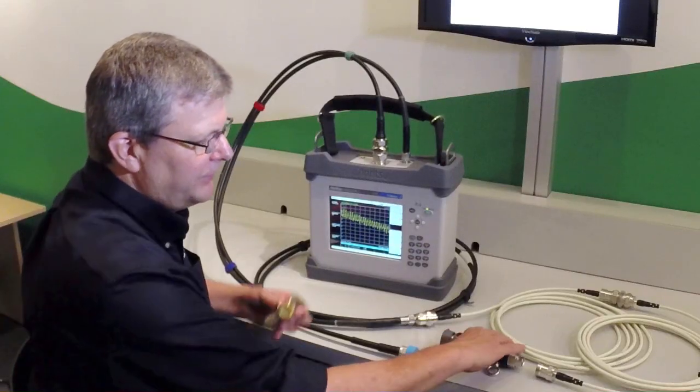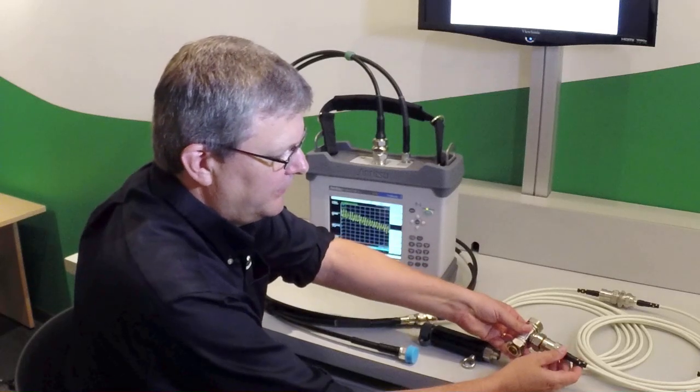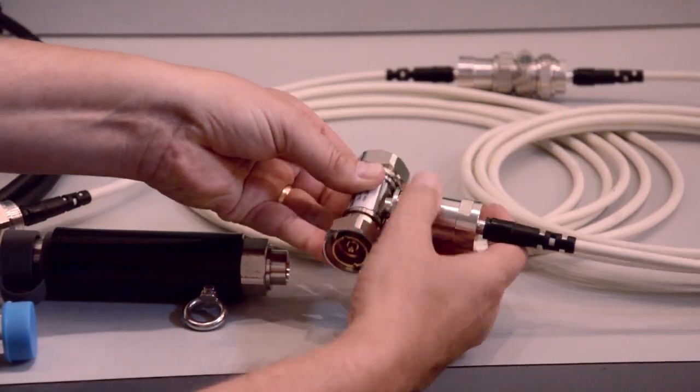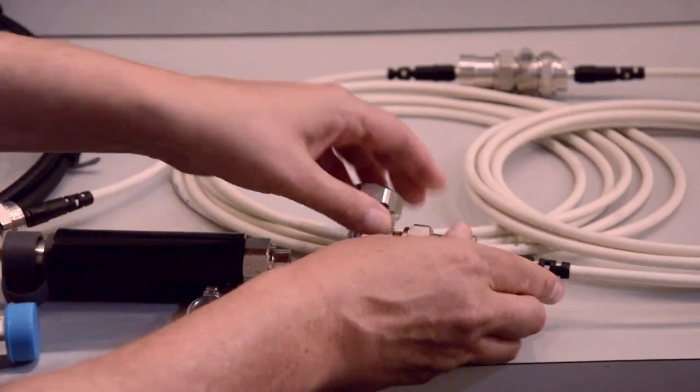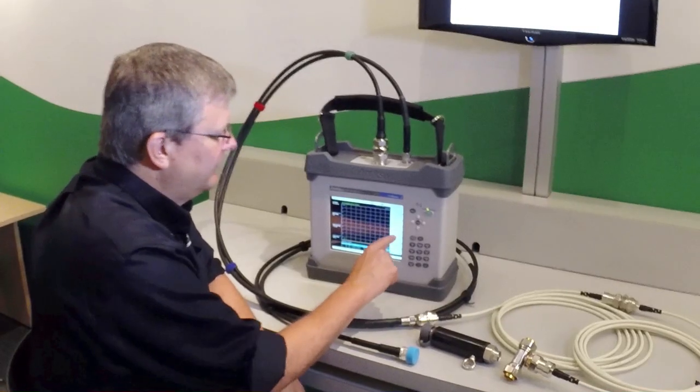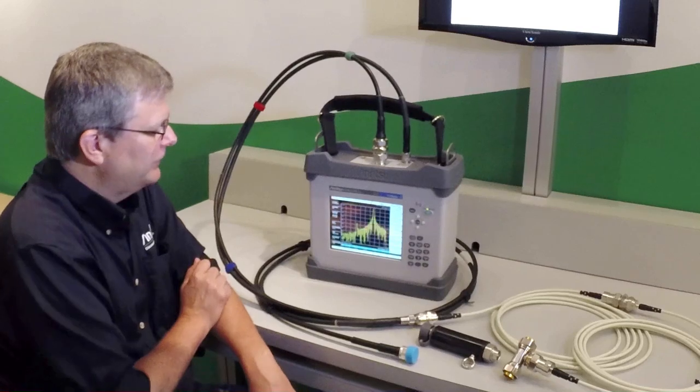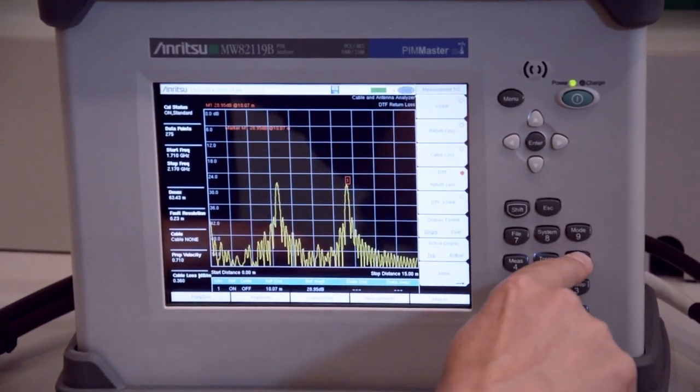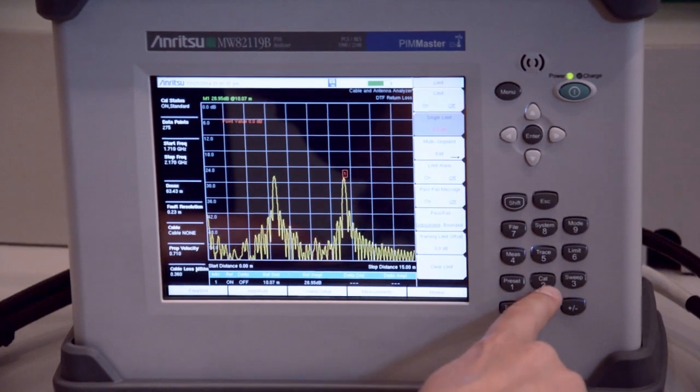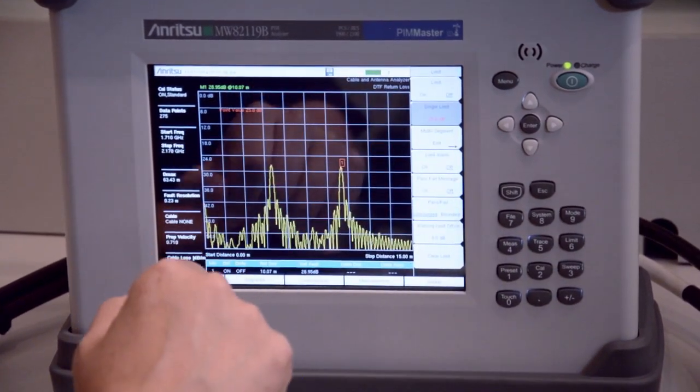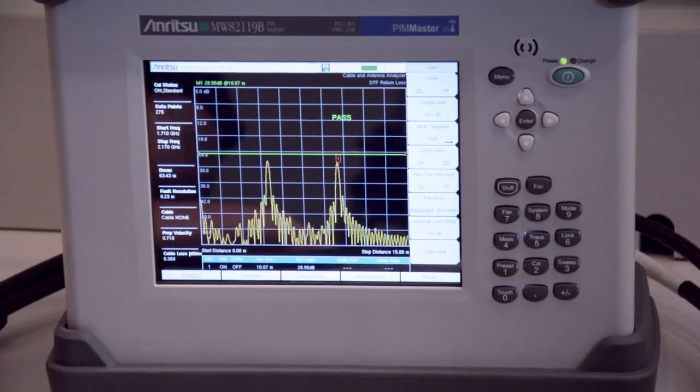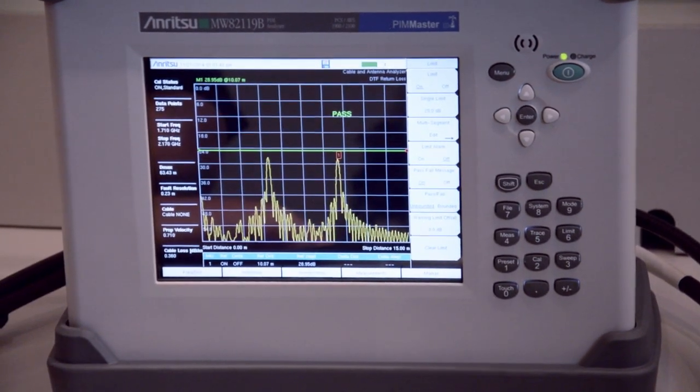The next measure we're going to do is attaching the precision load to the end of the cable and performing a distance to fault return loss measurement to look at the condition of the individual connectors. In this case, we'd like to see that the individual cables are below a 25 dB level to show that each individual cable is put together correctly.